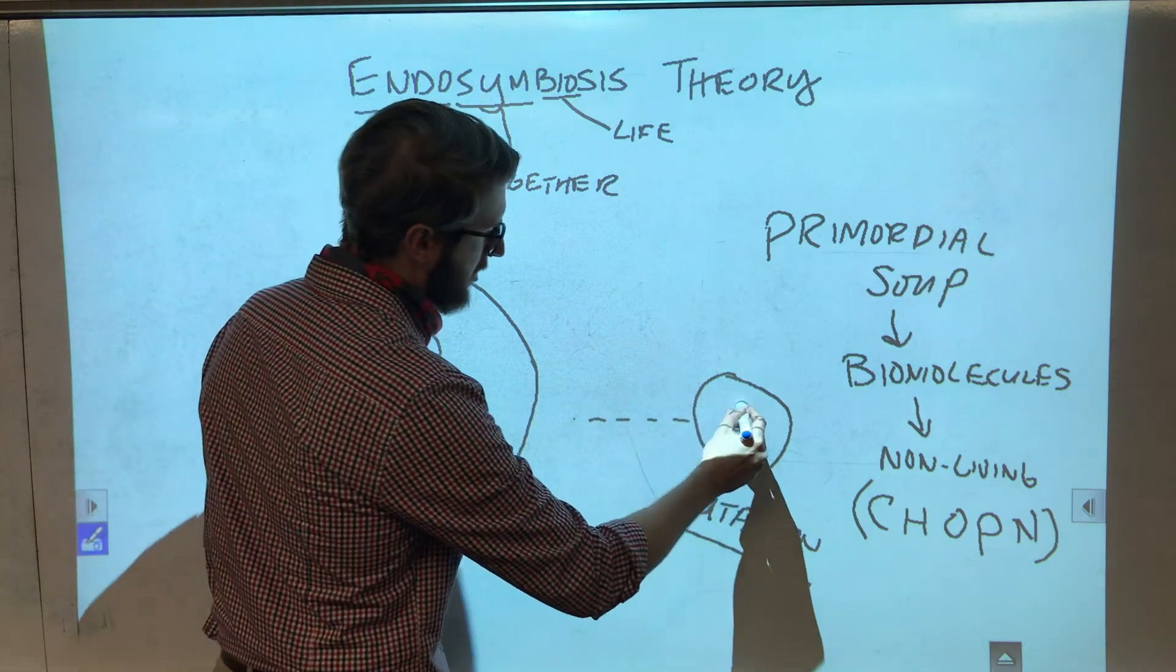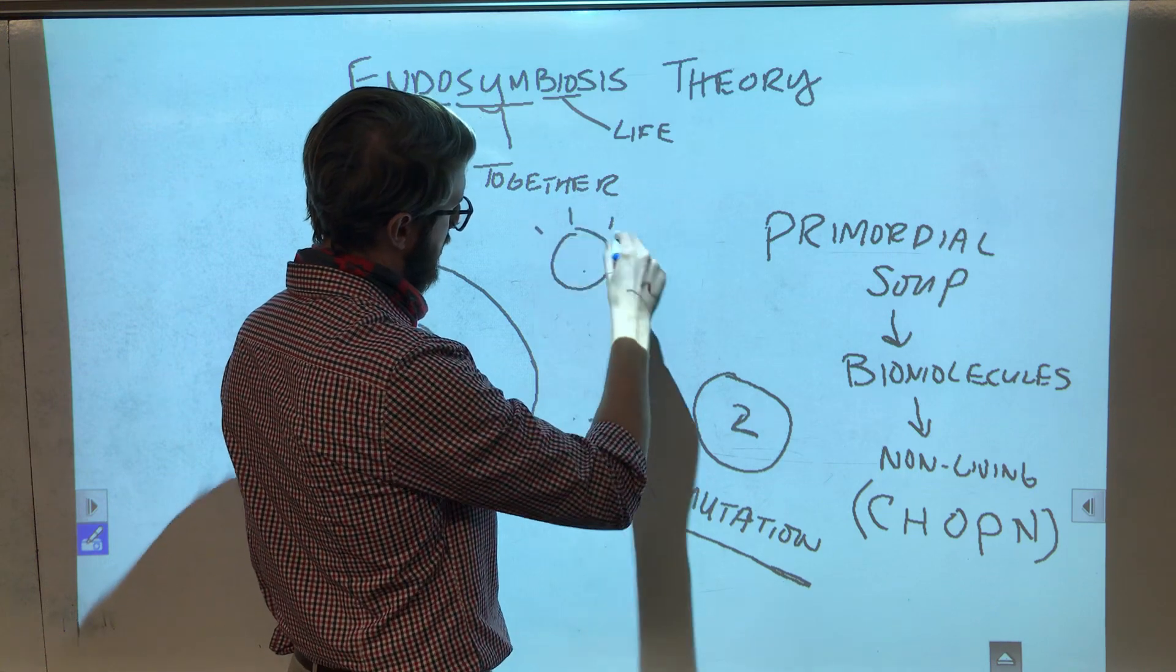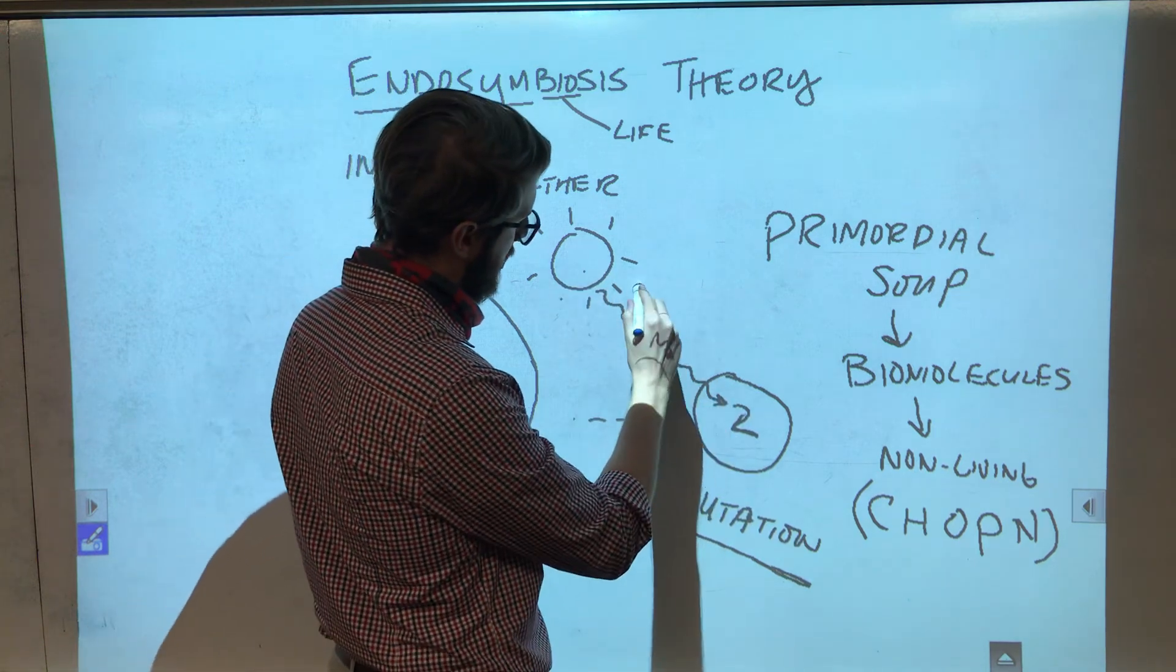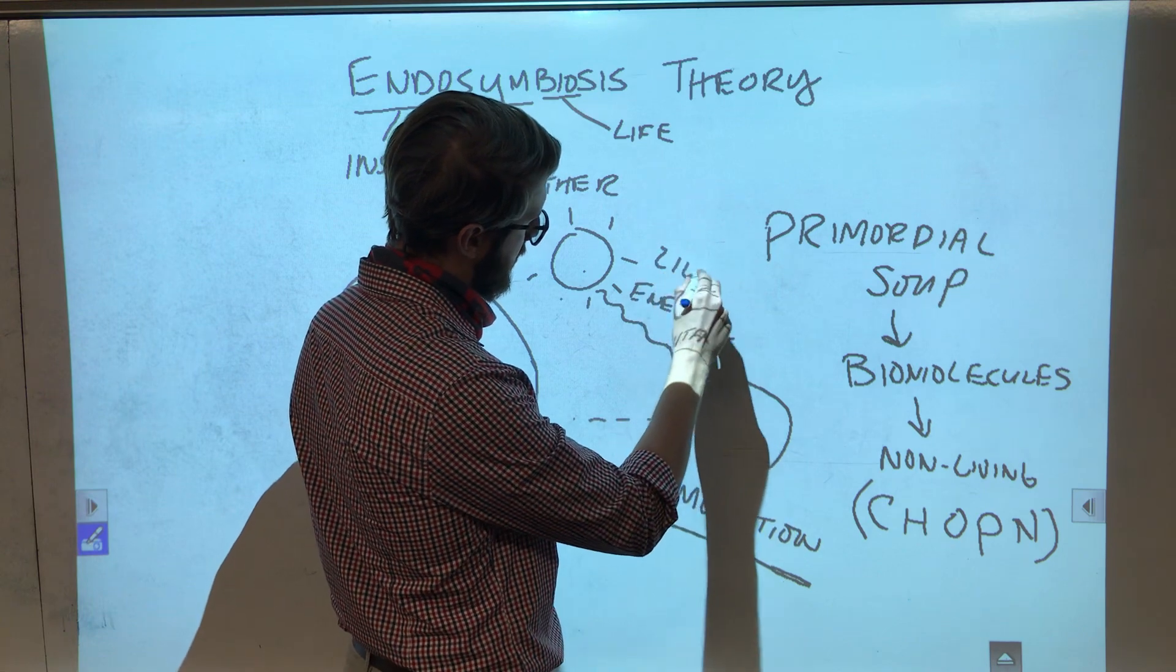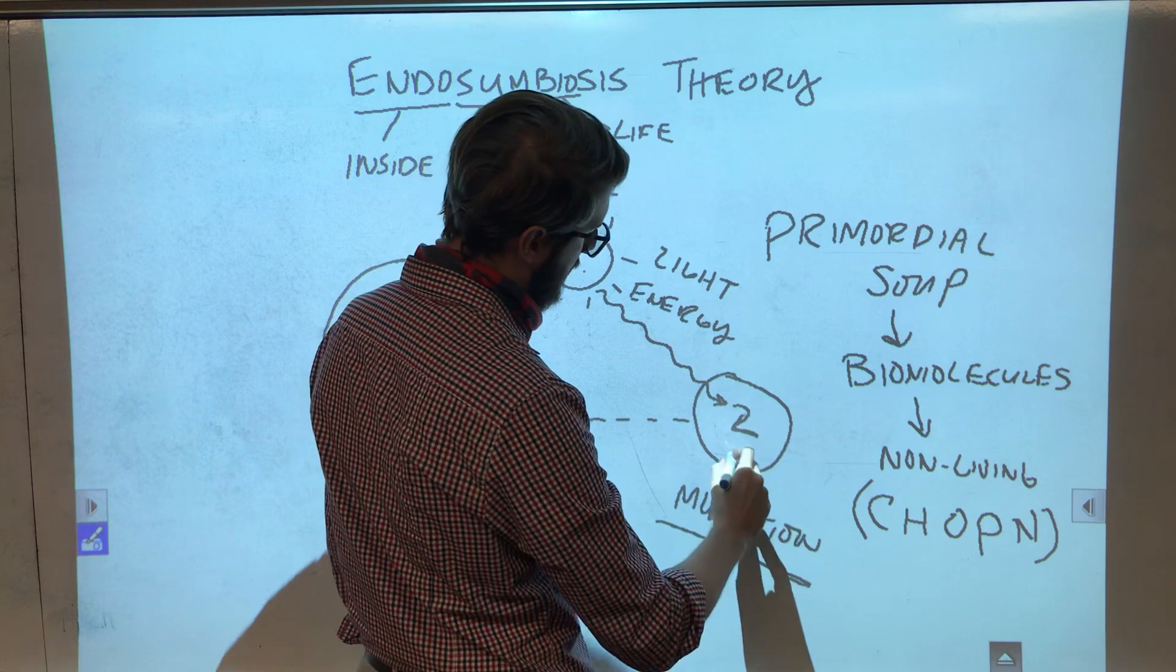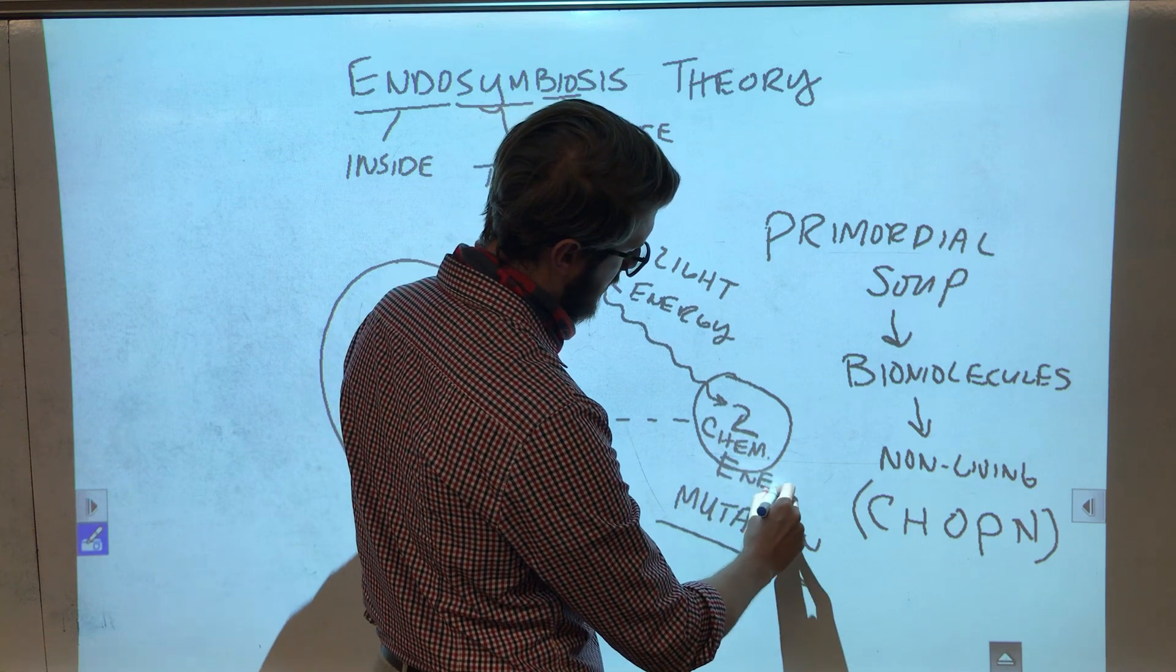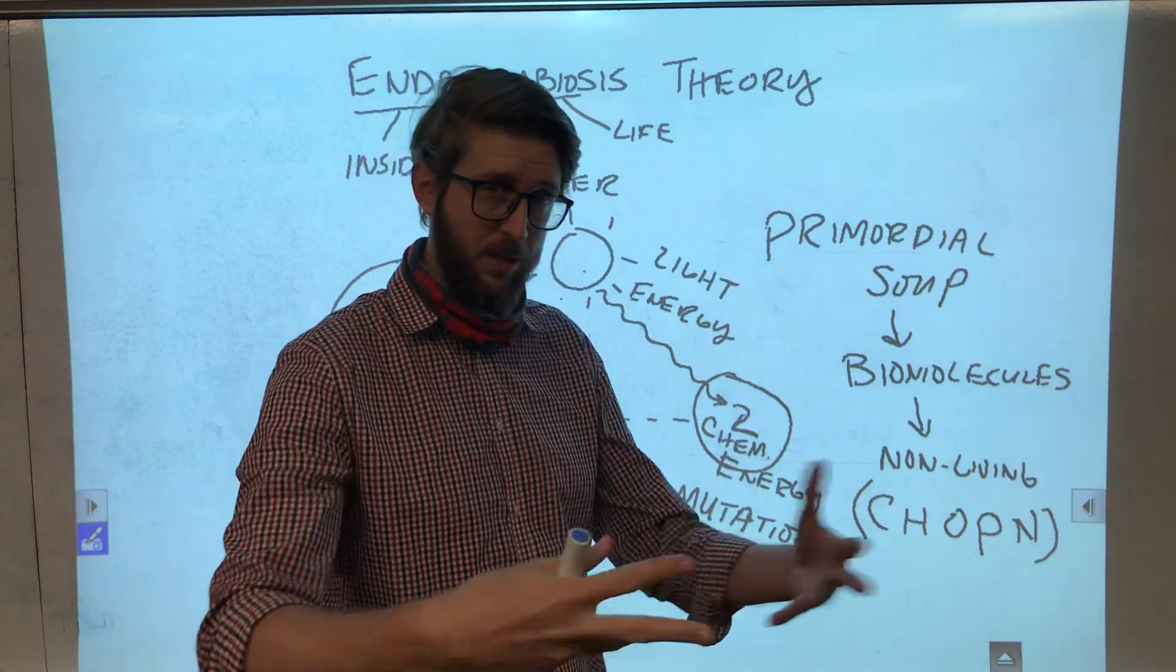Let's say little cell two has the ability to take sunlight, and it's figured out how to take sunlight energy, or light energy, and turn it into what we call chemical energy. A kind of energy that it can then use to power itself.